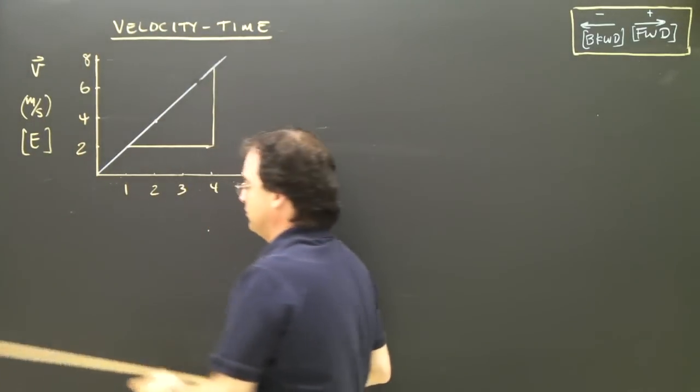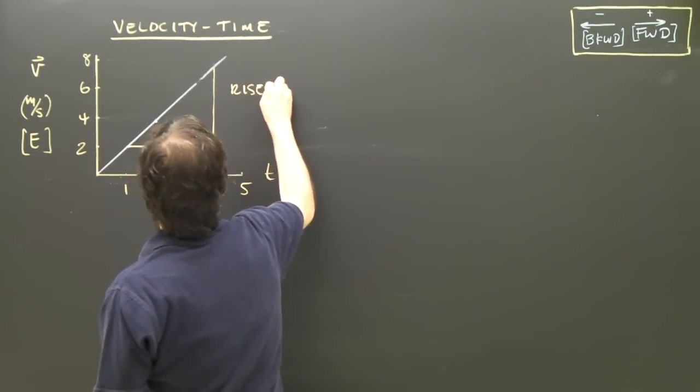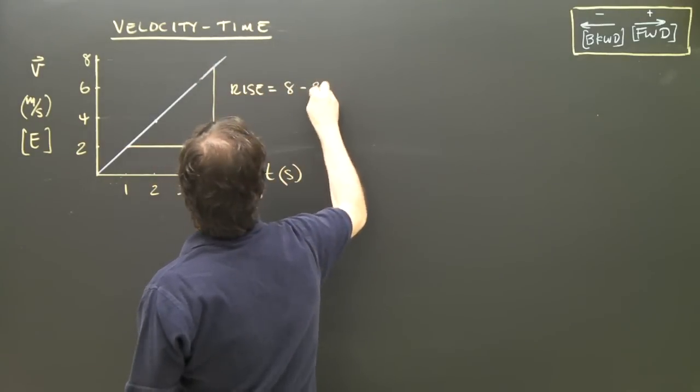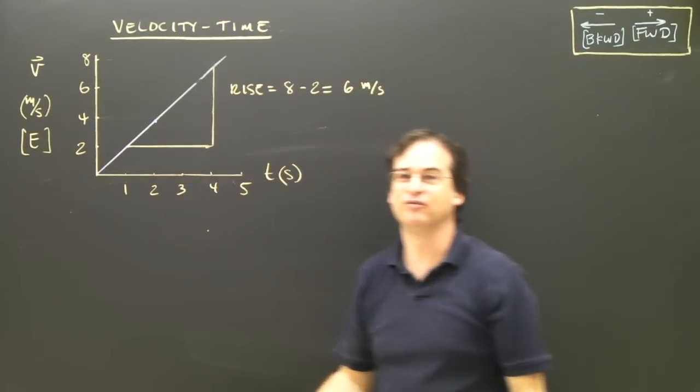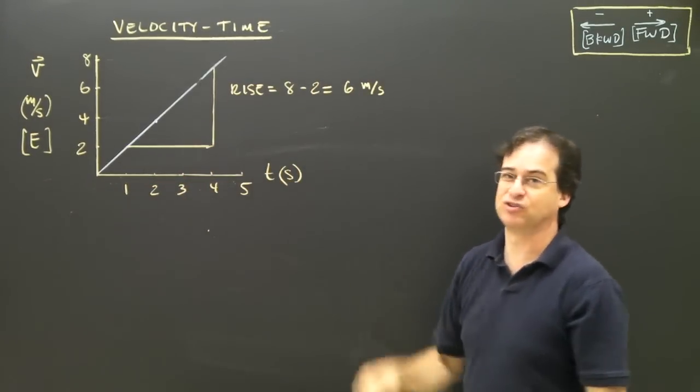That doesn't look perfect because I'm not doing this on graph paper. But to find the rise, well, my rise is, I go over here, it's 8 minus 2, which is 6, and the units are meters per second. Be careful of the units, because on a DT graph, this means something different, and the units are quite different.